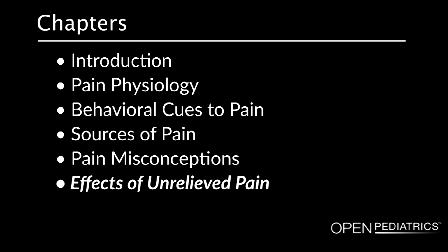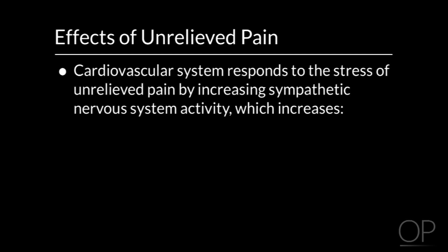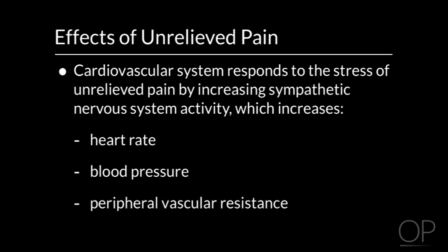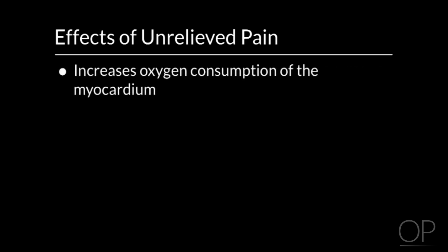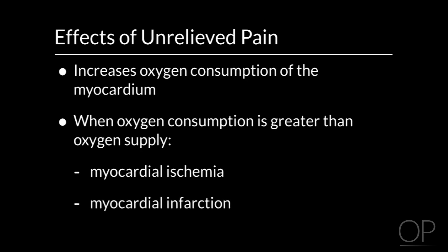Effects of Unrelieved Pain. When pain goes untreated, there are physiological consequences. The cardiovascular system responds to the stress of unrelieved pain by increasing sympathetic nervous system activity, which increases heart rate, blood pressure, and peripheral vascular resistance. As the workload and stress of the heart increase, tachycardia occurs, which increases oxygen consumption of the myocardium. When oxygen consumption is greater than oxygen supply, myocardial ischemia and myocardial infarction may occur.